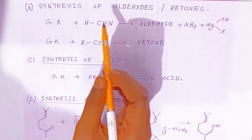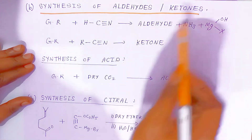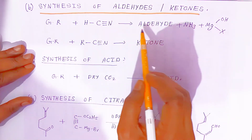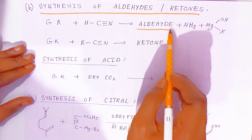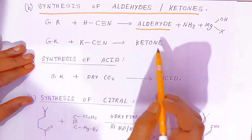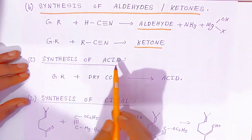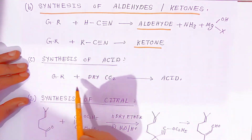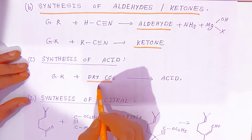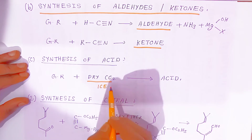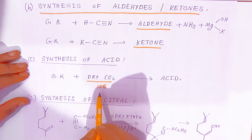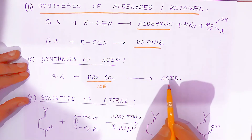For synthesis of aldehydes and ketones: Grignard reagent reacting with hydrogen cyanide always gives an aldehyde, and Grignard reagent reacting with alkyl cyanide gives a ketone. For synthesis of acid: Grignard reagent reacts with dry carbon dioxide (dry ice) to give a carboxylic acid.